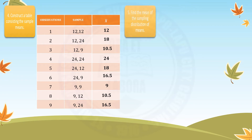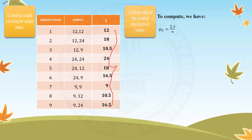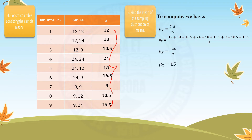Step 5: find the mean of the sampling distribution of means. Using the formula — sum of sample means divided by n — we add all sample mean values in the third column to get 135, then divide by 9 as the number of observations. The mean of the sample means is equal to 15.